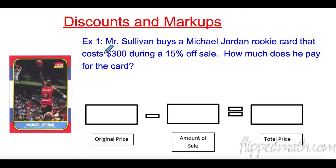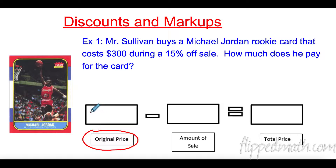Mr. Sullivan buys a Michael Jordan rookie card that costs three hundred dollars during a 15% off sale. How much does he pay for the card? Alright, so this is made up of two things: it's made up of the original price — that is three hundred dollars — and we are going to subtract some amount that we get off for the sale, and that'll give us our total price.